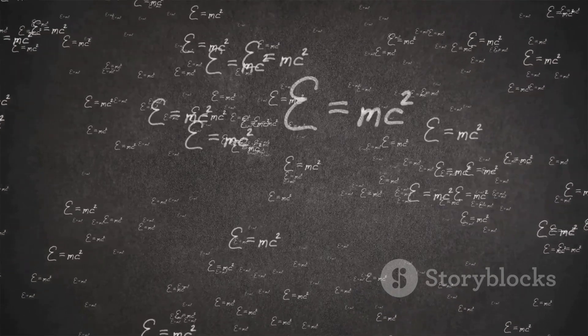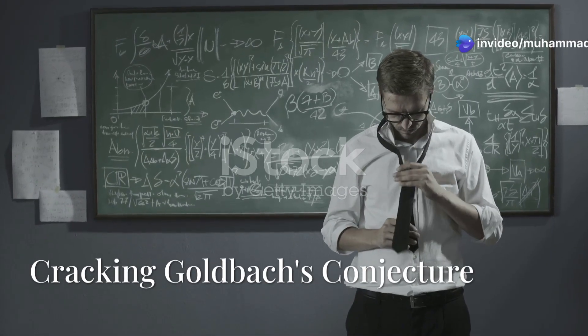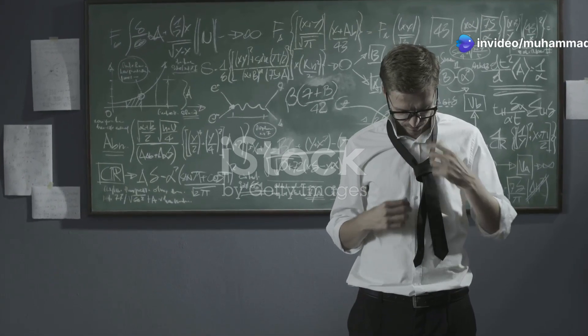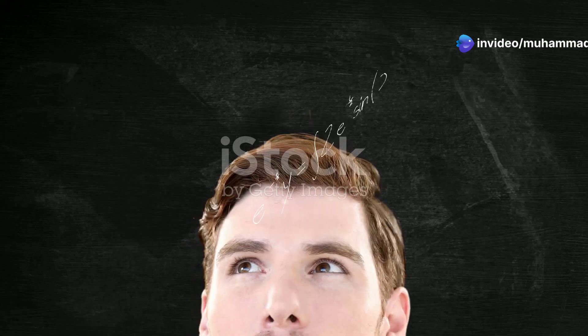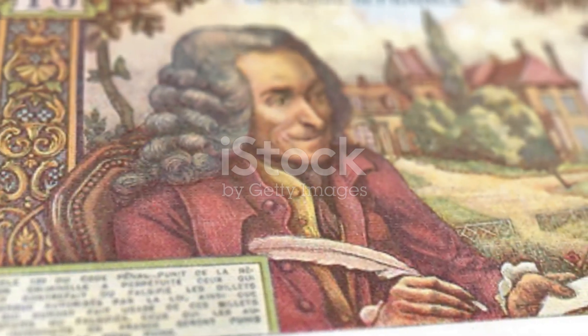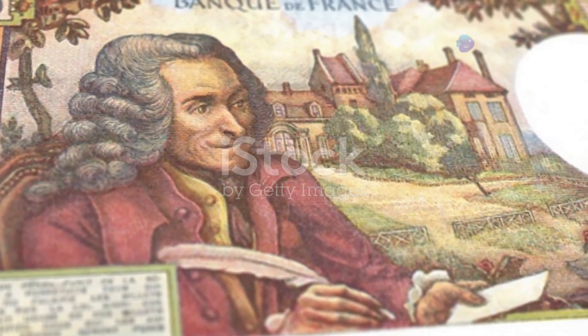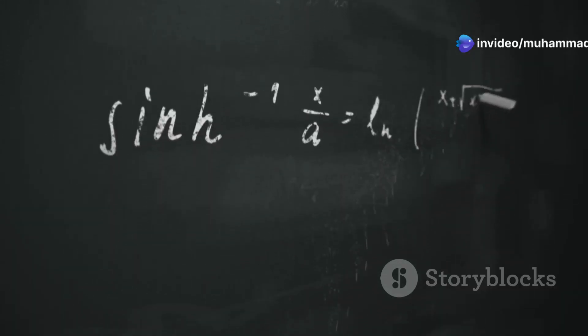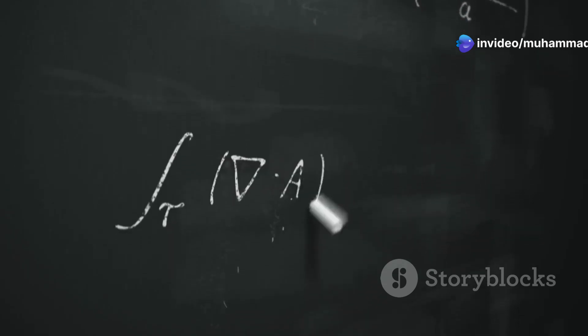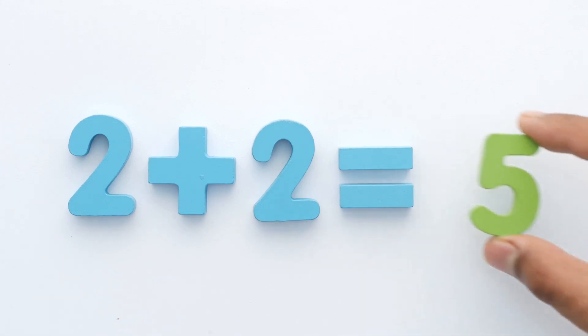Goldbach's conjecture is one of the oldest and most famous unsolved problems in mathematics. In 1730, Prussian mathematician Christian Goldbach proposed this conjecture in a letter to Leonhard Euler. It states that every even number greater than two can be written as the sum of two prime numbers. For example, the number 10 can be expressed as 3 + 7 or 5 + 5.